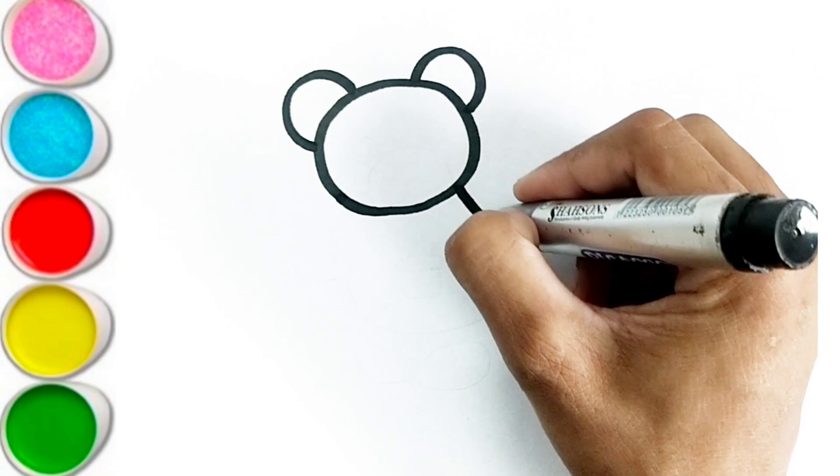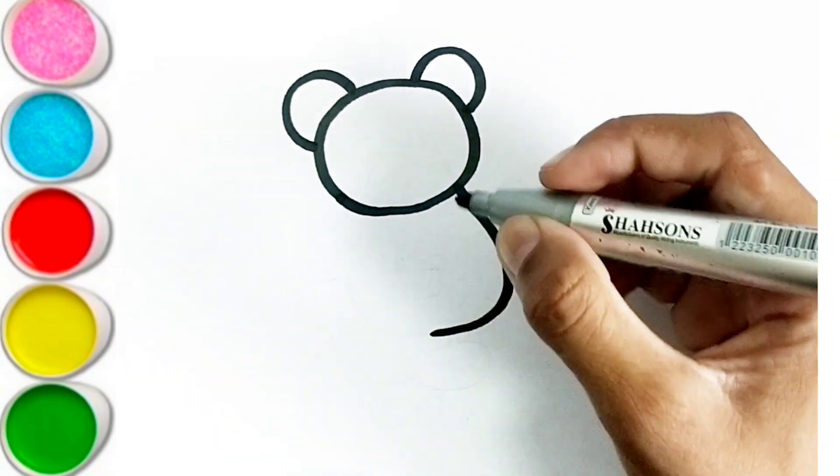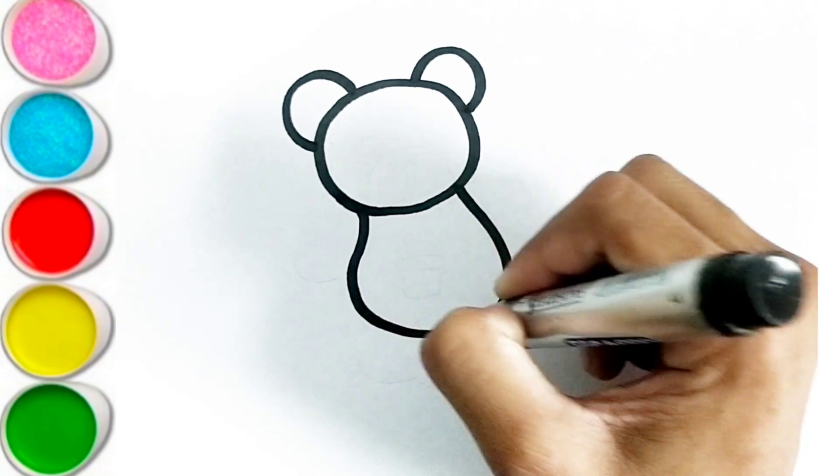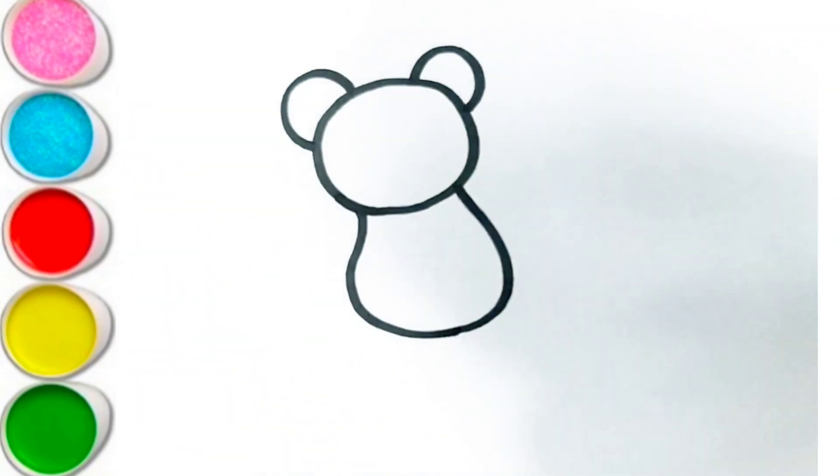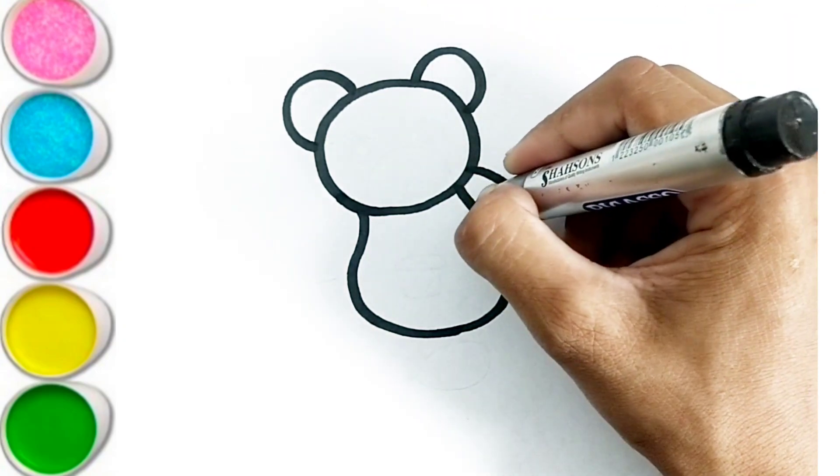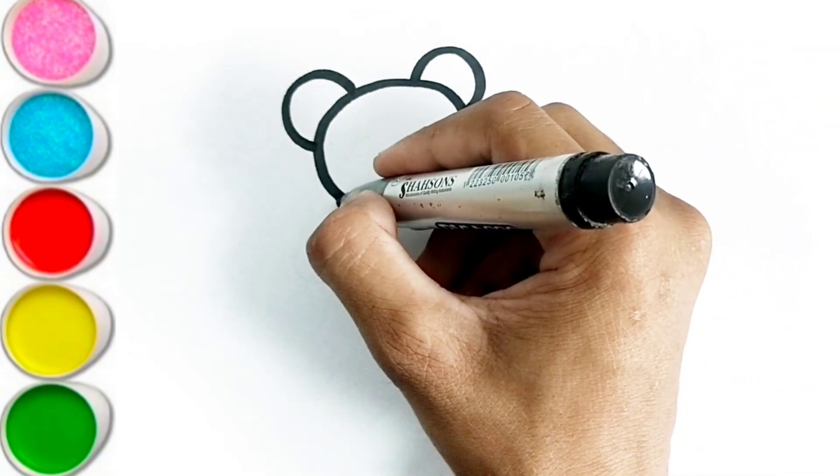E is for elephant, a, a, elephant. F is for frog, f, f, frog. G is for goat, g, g, goat. H is for hand, ha, ha, hand.